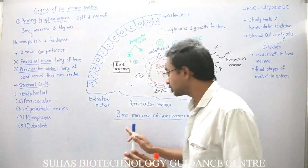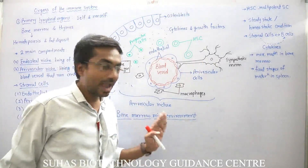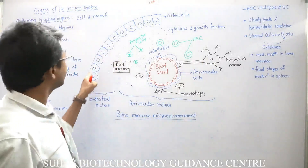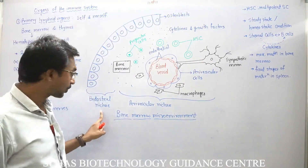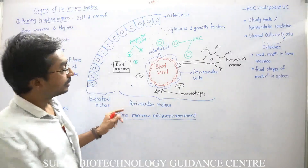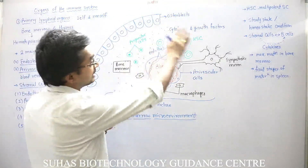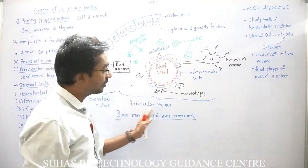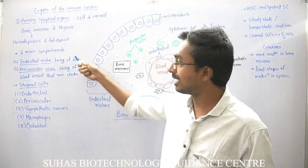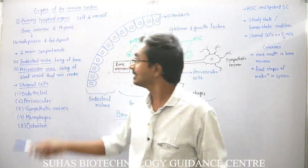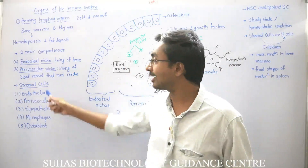Here we have shown a TS — that is, a transverse section of the femur. In that, you can see the outer lining is the endosteal niche, while the lining inside it is actually the perivascular niche. So the two main compartments are endosteal and perivascular. Inside the bone marrow, the actual cells are the stromal cells.